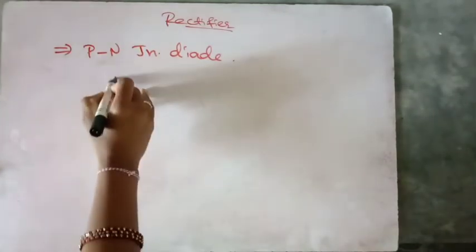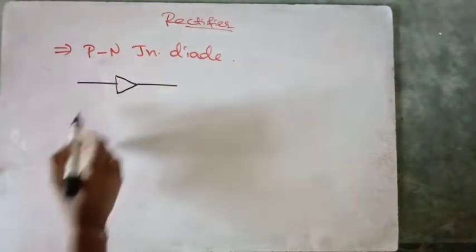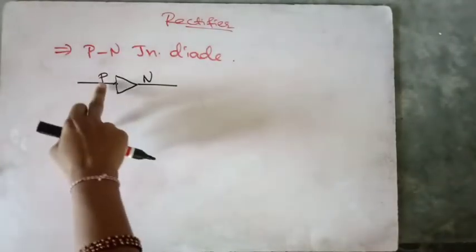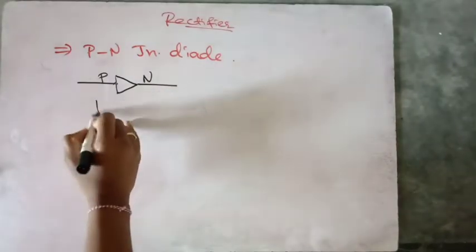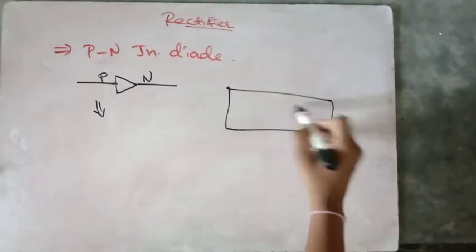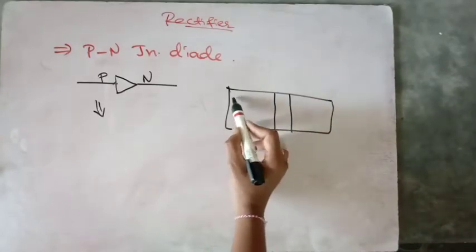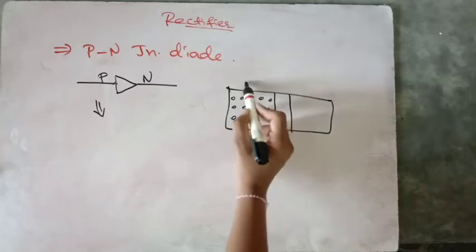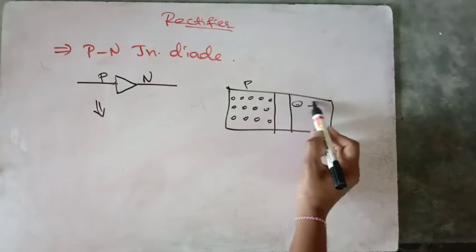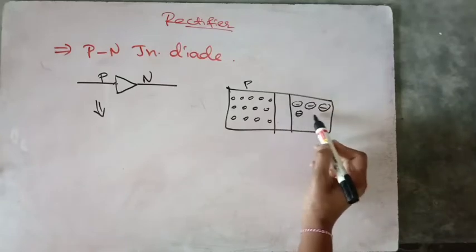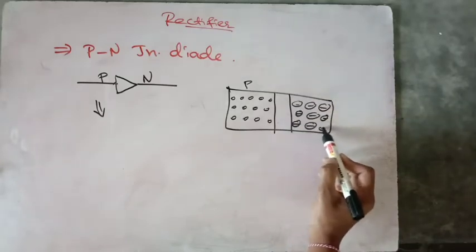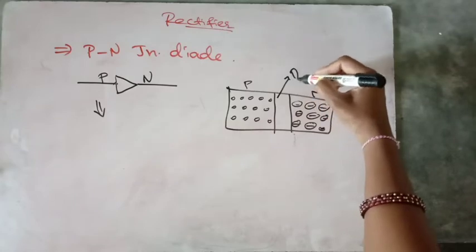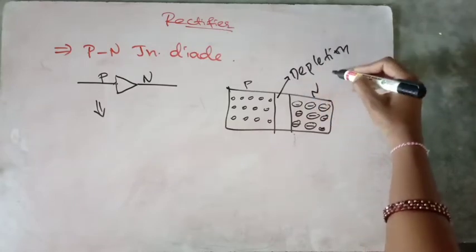The symbol for PN junction diode has a P junction and an N junction. For P type, the concentration of holes is more. For N region, the concentration of electrons is more. And in between the P and N regions, we have a depletion region.